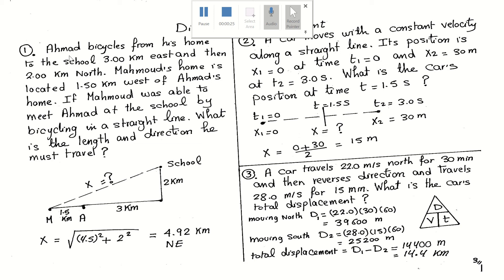It says that Ahmed bicycles from his home to school, 3.0 kilometers east and then 2.0 kilometers north. Mahmoud's home is located 1.5 kilometers west of Ahmed's home. If Mahmoud was able to meet Ahmed at the school by bicycling in a straight line, what is the length and direction he must travel?